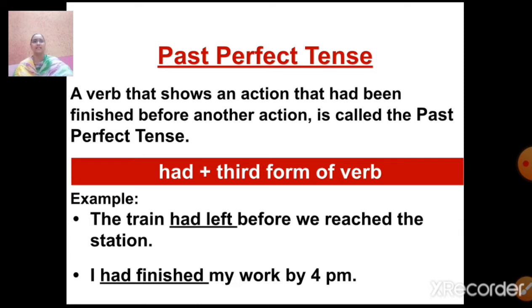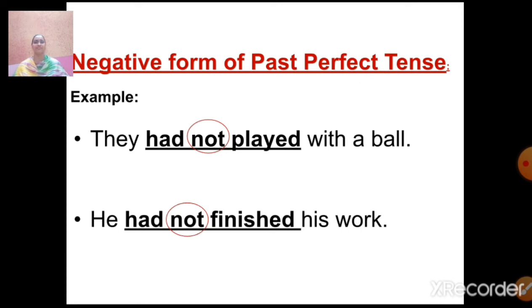Now let us form the negative form of past perfect tense. This is very simple — you just need to add 'not' with the helping verb. 'They had not played with the ball.' Here the subject 'they' is plural. 'He had not finished his work.' Here the subject 'he' is singular. Whether the subject is singular or plural, for the negative form of past perfect tense we use: had plus not plus third form of verb.